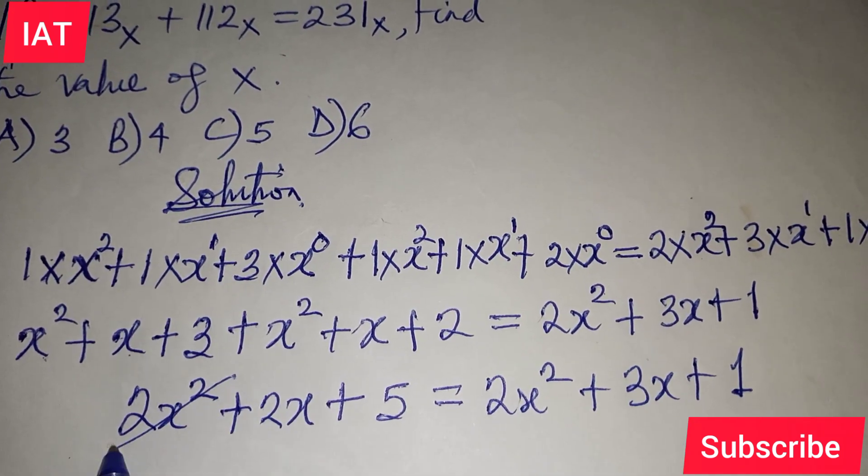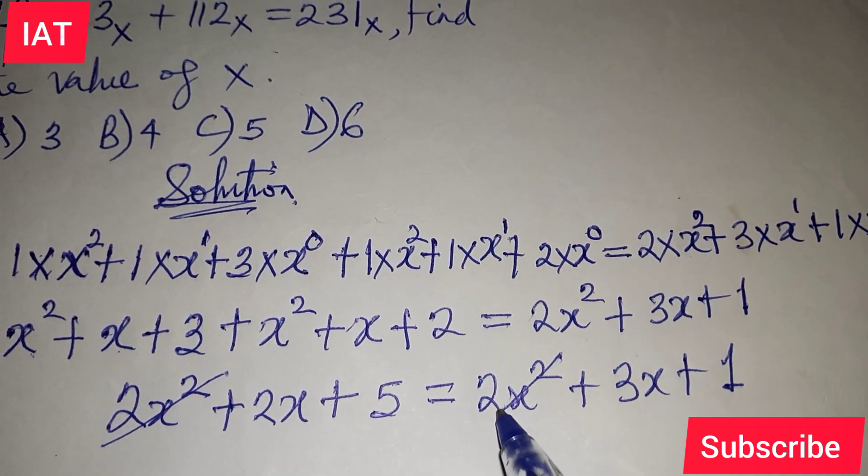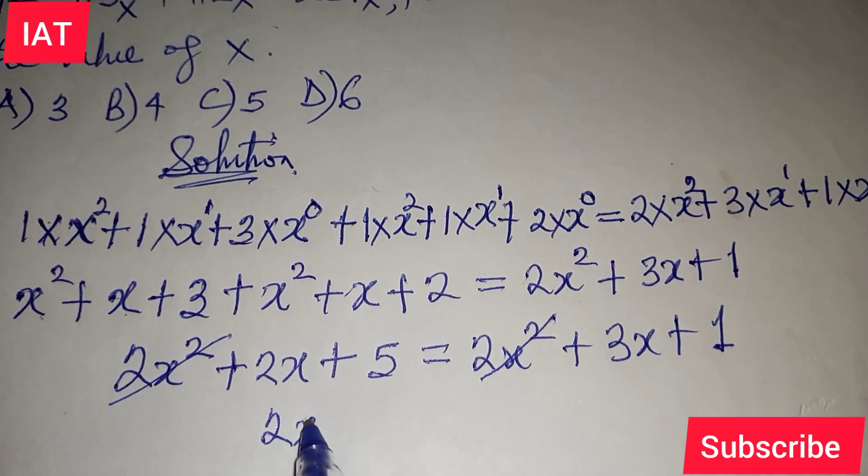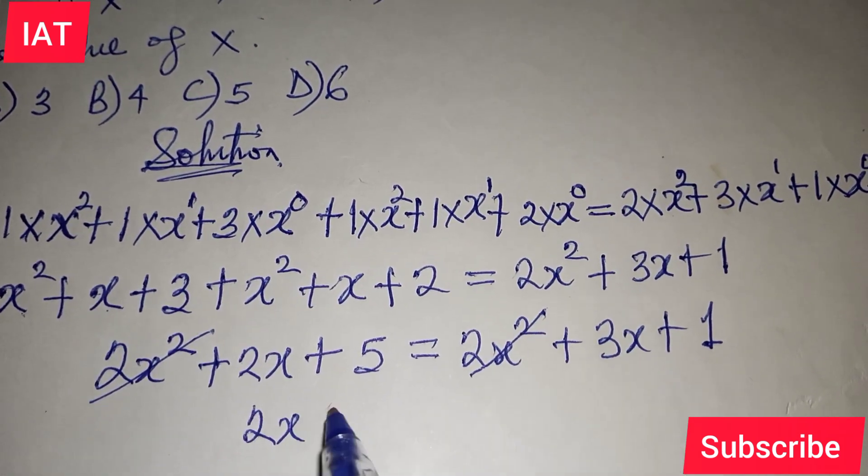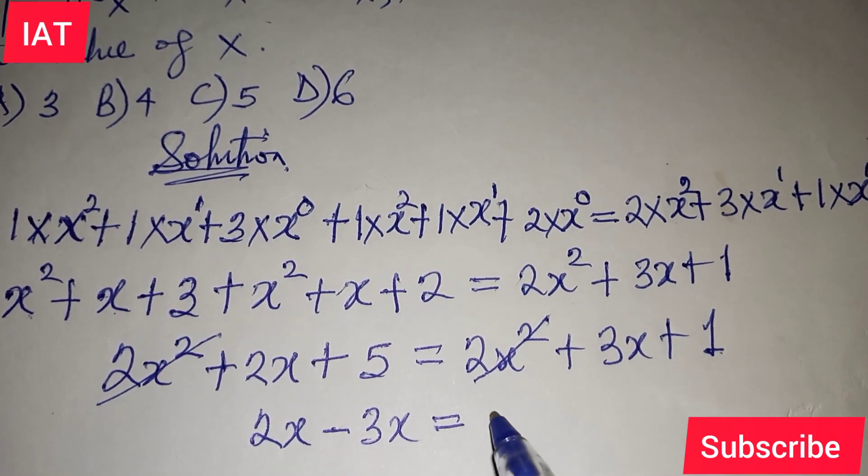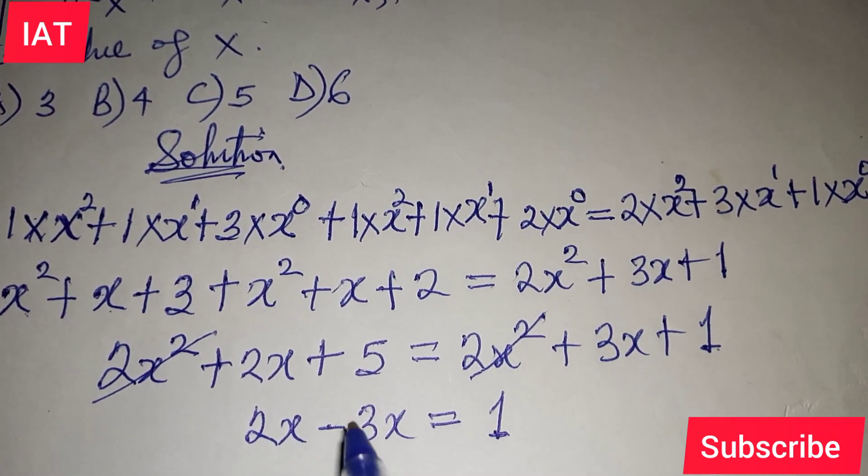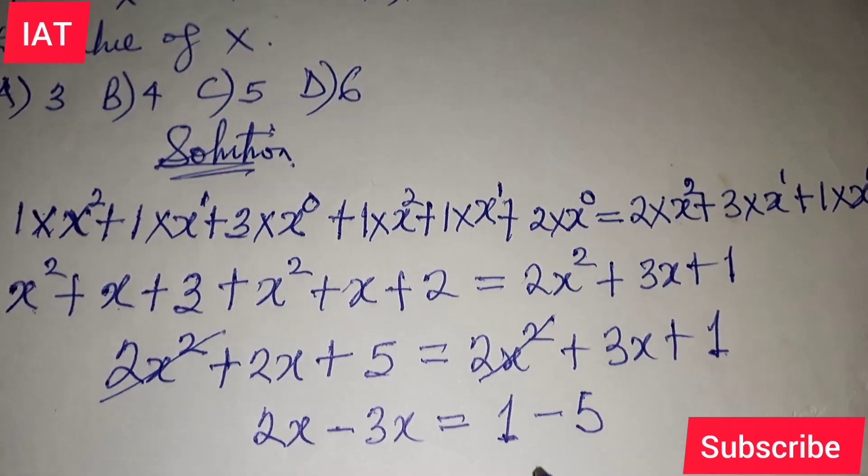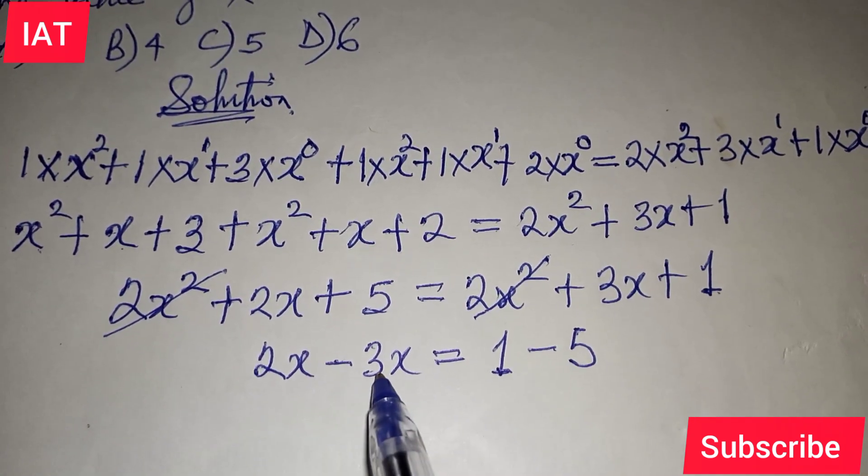We have 2X squared on both sides, so we cancel them out. What's left is 2X. If we bring 3X across to the left-hand side, we have minus 3X. We're essentially collecting like terms. This 5 moves, so it changes to minus 5. Finally, 2X minus 3X gives us minus X, which equals 1 minus 5, which gives minus 4.